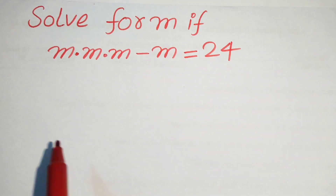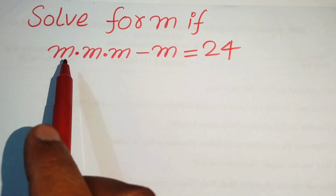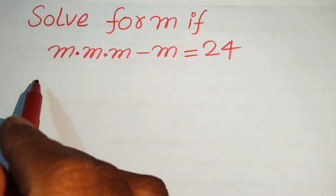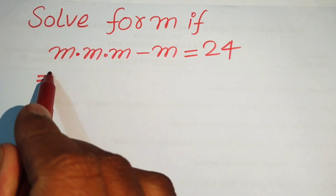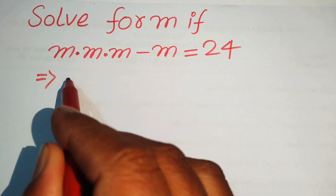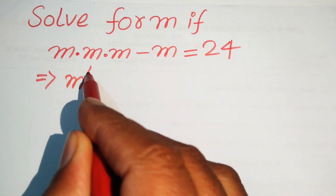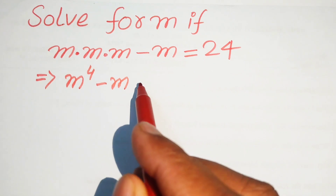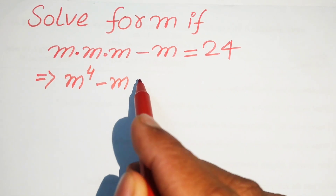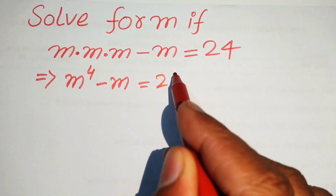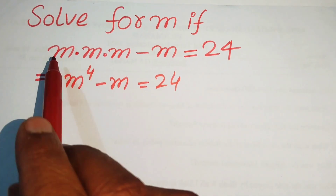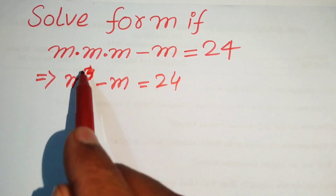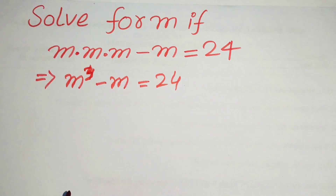First, focus on this term — you see here m is multiplied 3 times, so we write this term as m to the power of 3, and this is minus m, and this whole equals to 24. So this is m cubed minus m equals to 24.